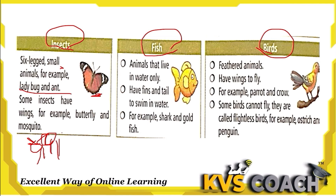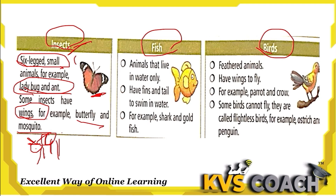Some insects also have wings, like butterfly and mosquito. So insects are six-legged animals, and some of them also have wings.